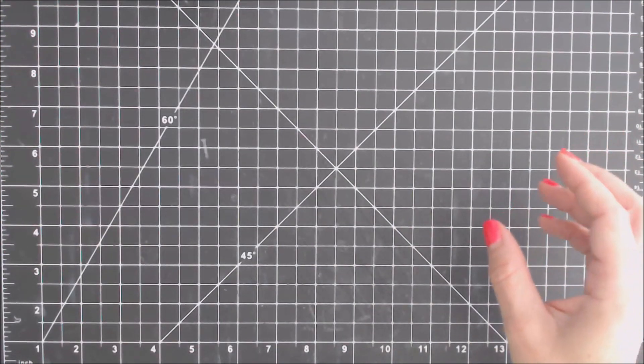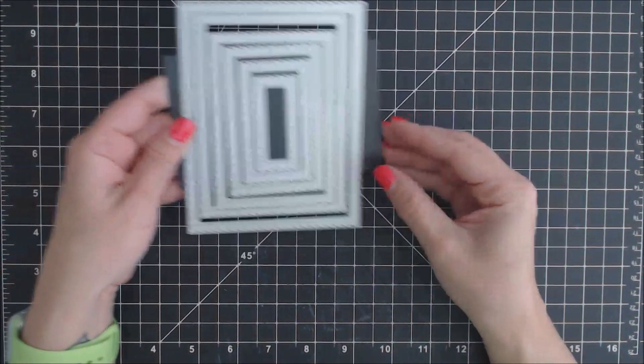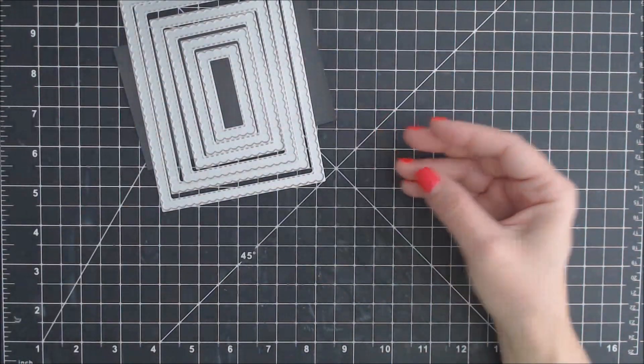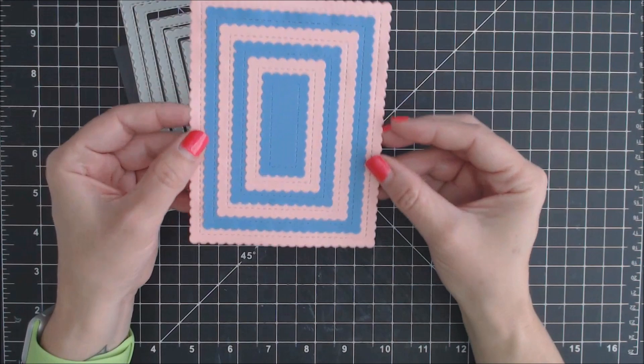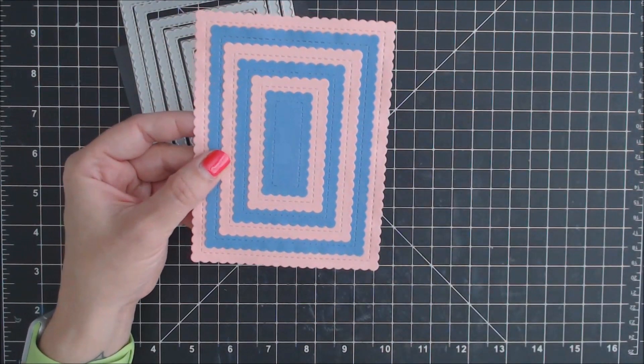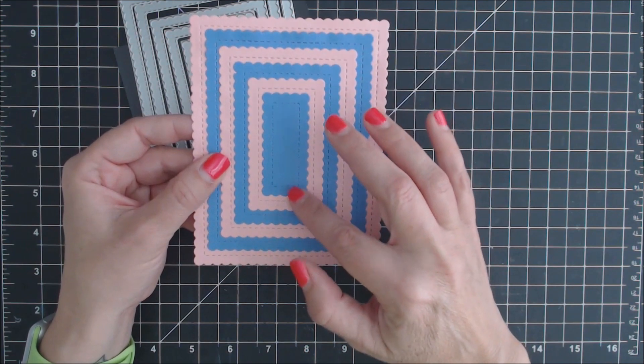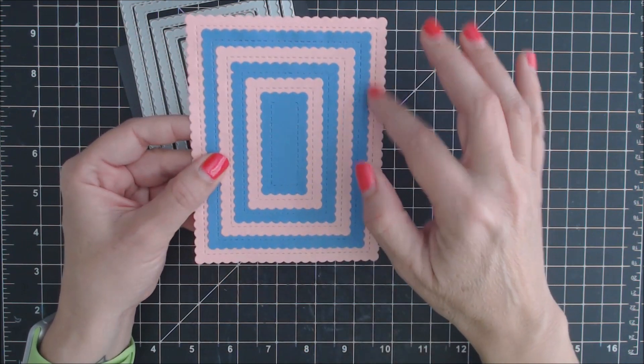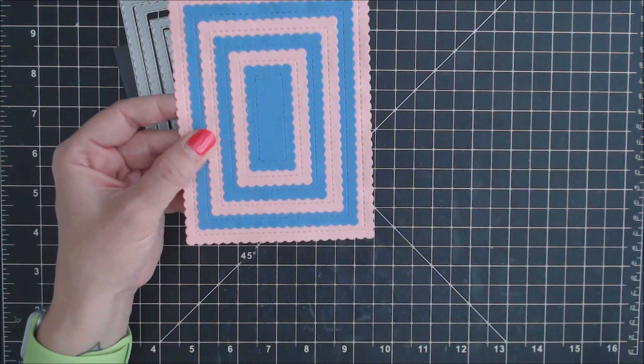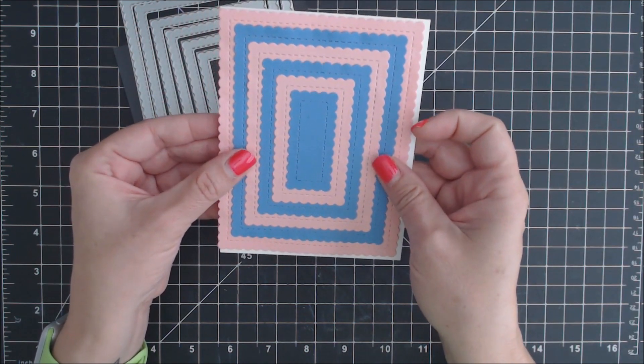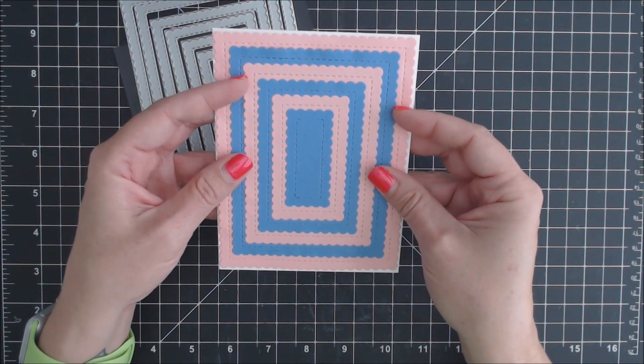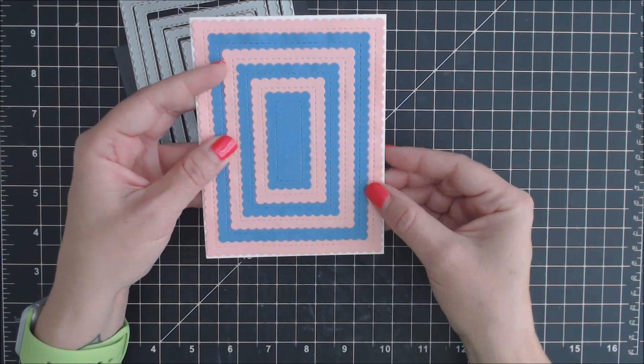And last but not least, we have the rectangle ones. This one also contains six different dies. Here they are cut out. The sizes on this one range from one to two and a quarter inch and four and an eighth inch to five and three eighths of an inch. And this fits perfectly on your standard sized card base, leaving a little border all around.